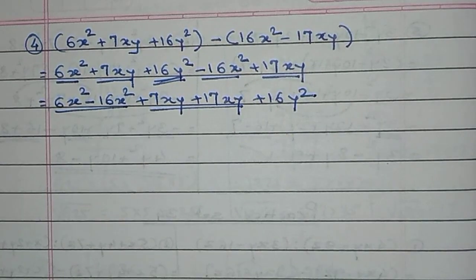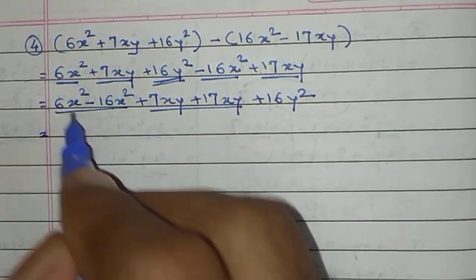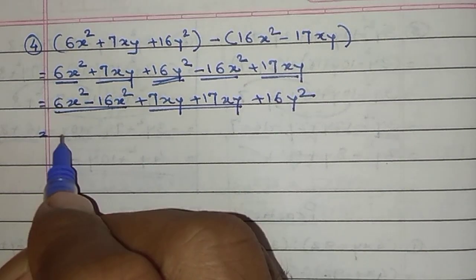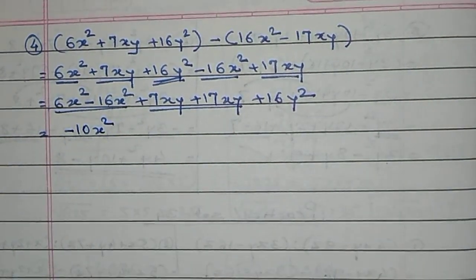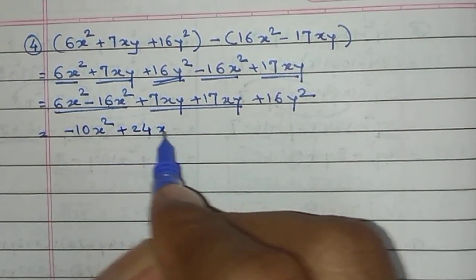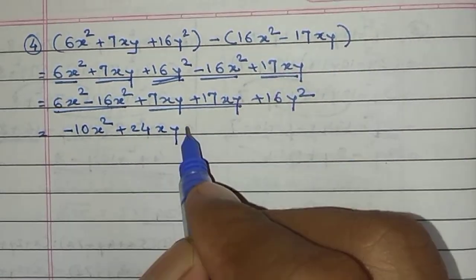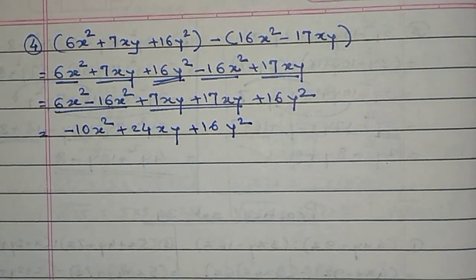There is no pair for 16y², so let it remain as it is. 6 minus 16 gives minus 10x². Plus 7 plus 17 gives plus 24xy. And plus 16y² has no pair so it remains as it is. This is our final answer: minus 10x² plus 24xy plus 16y².